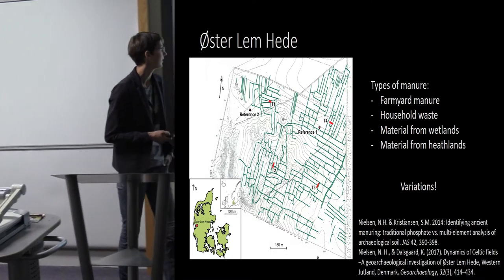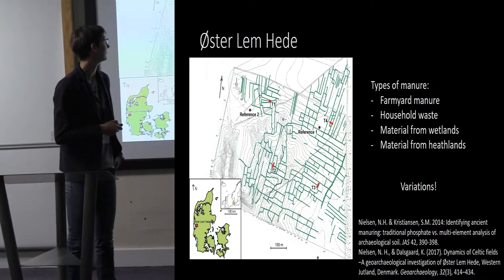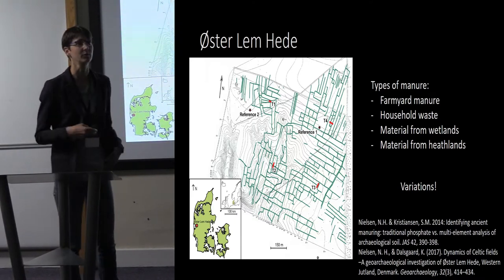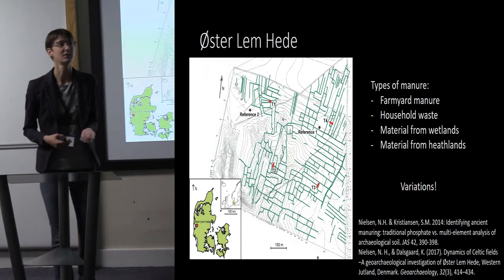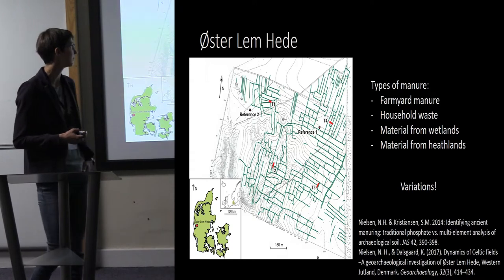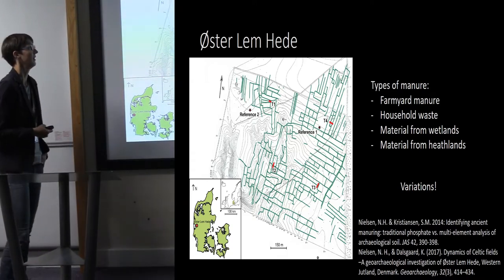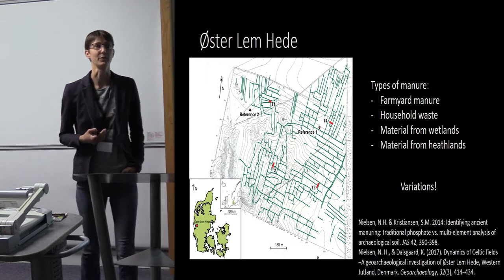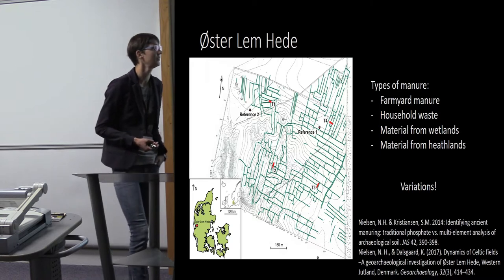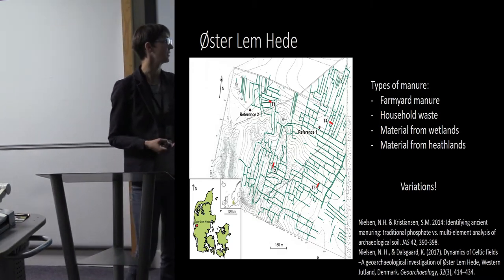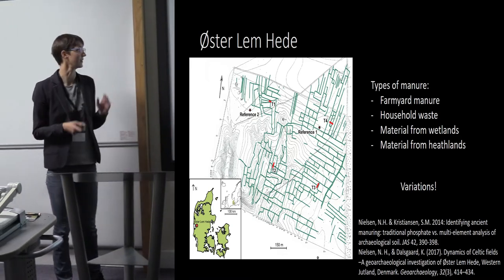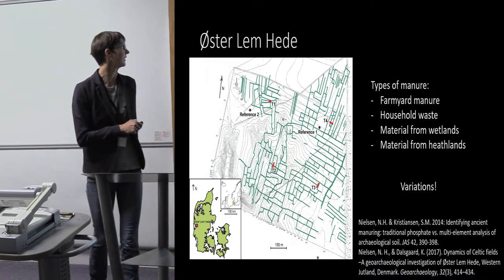We made four trenches cutting through the banks and adjacent fields and took samples. Based on studies of these samples, we could conclude that there were at least four different types of material that had been added to the fields: farmyard manure, household waste, material from wetlands, and material from heathlands. We could also see variations between different areas within the field system.